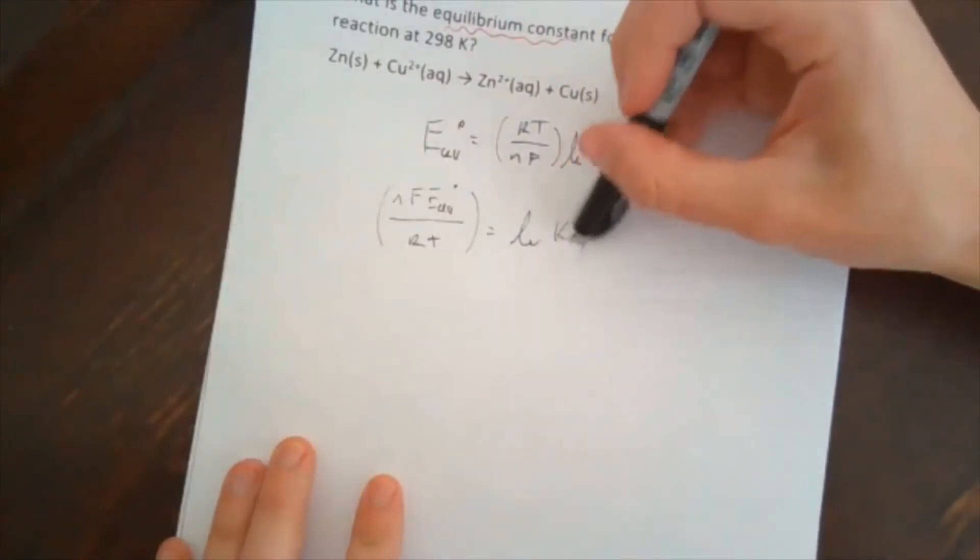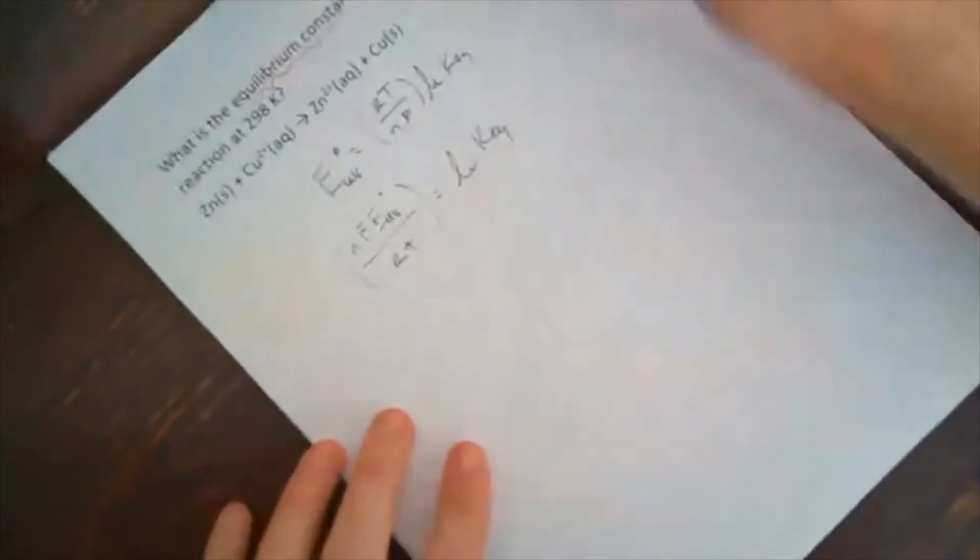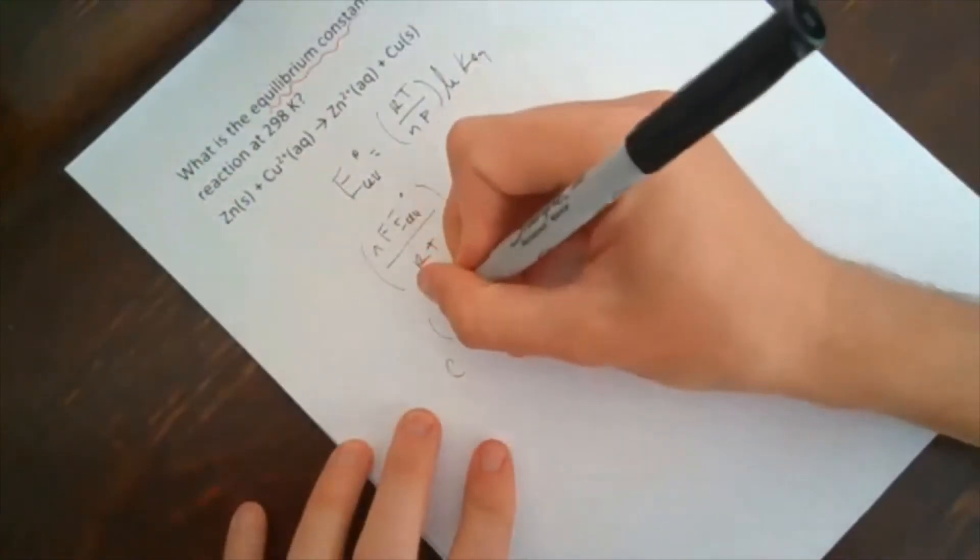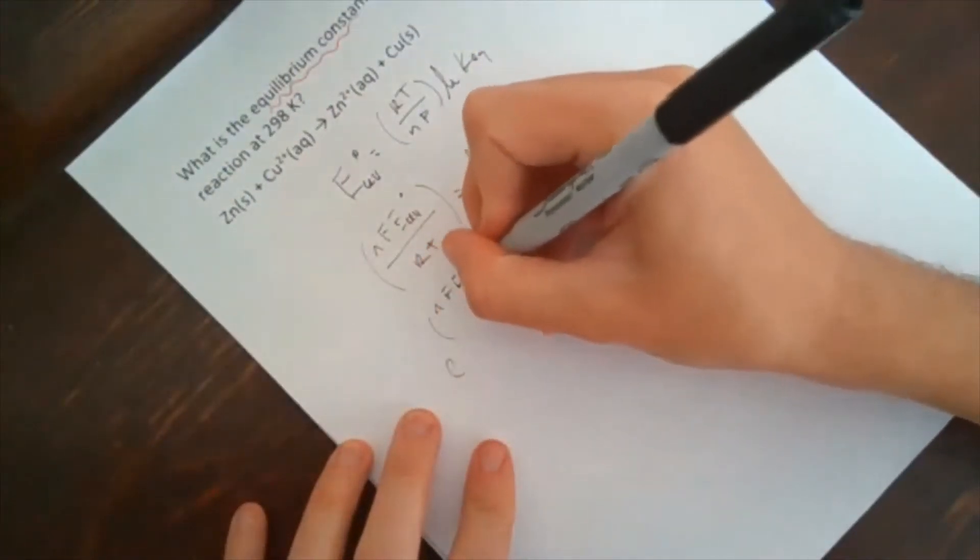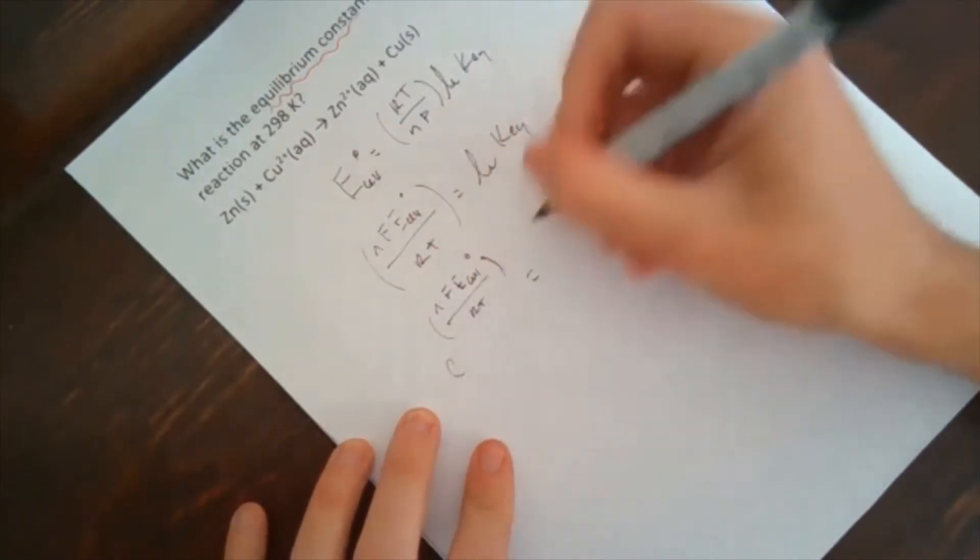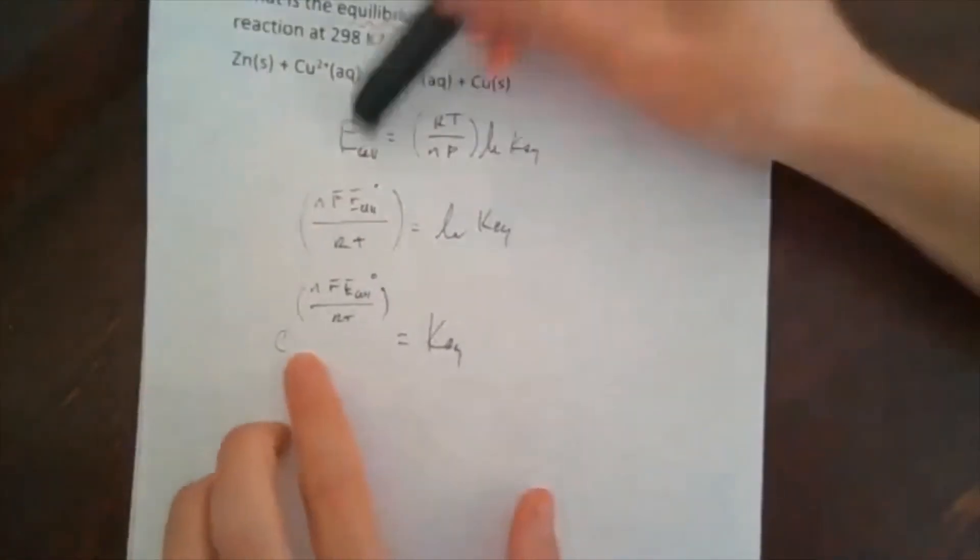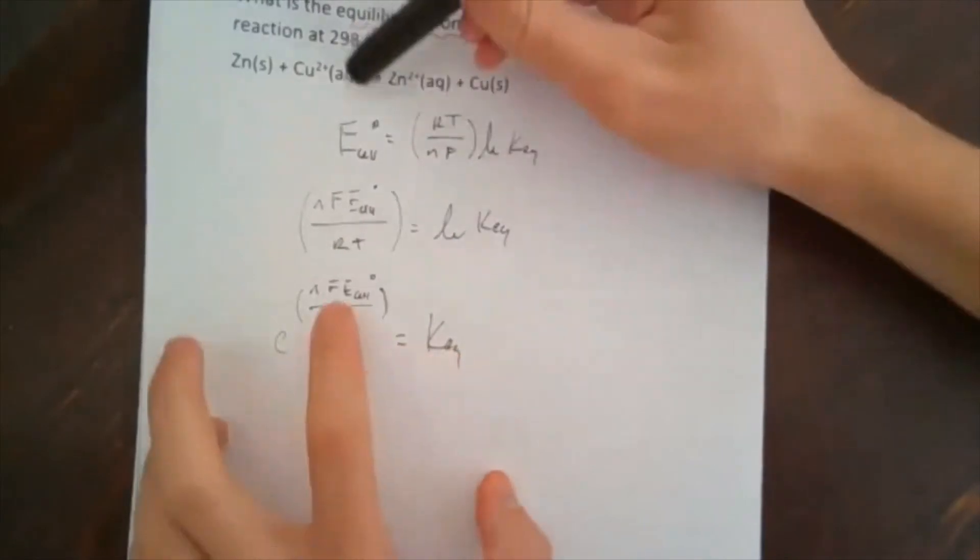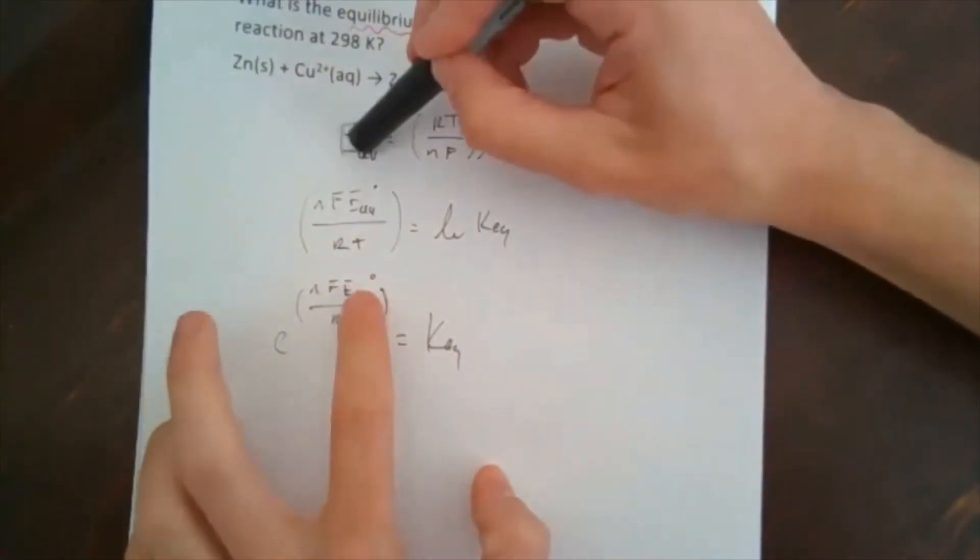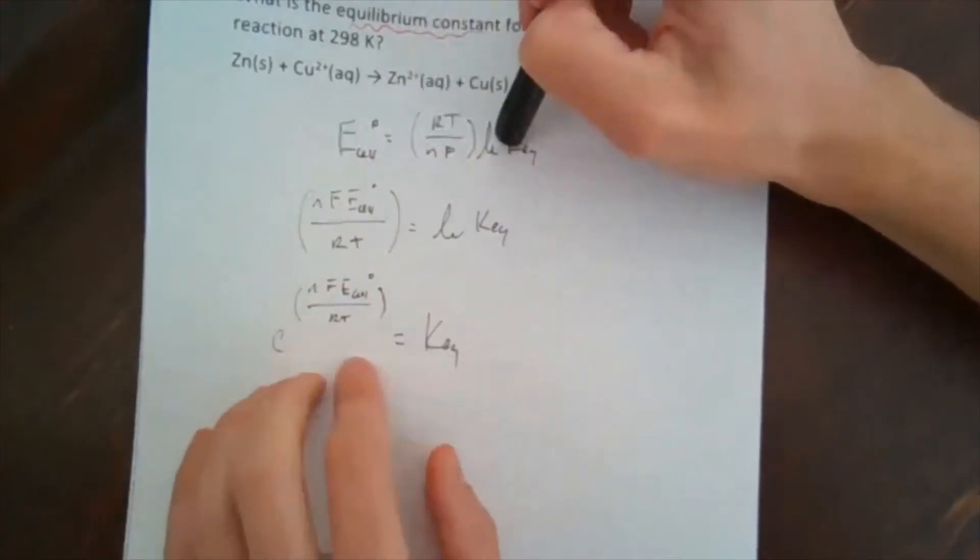So what we end up with on the other side of the equation will be nF E_cell° divided by RT. The reciprocal of this fraction multiplied by E_cell is equal to ln of the equilibrium constant. And so if I want to isolate out the equilibrium constant, I need to get rid of this natural logarithm, so do the antilog, which would be the same thing as raising this as an exponent of e. E to the nF E_cell° over RT is going to be equal to the equilibrium constant.